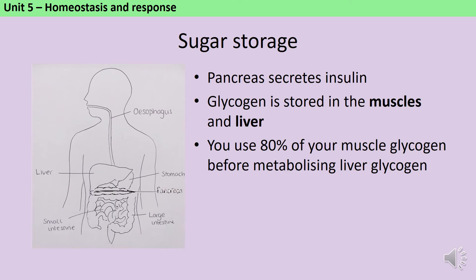This glycogen is stored in two main places: the muscles and also the liver, which is a very large organ visible in diagrams of the digestive system.